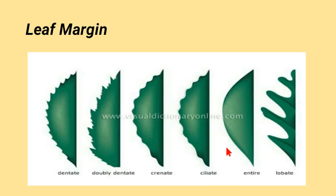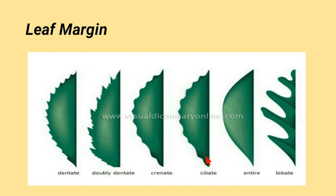On the basis of leaf margins, leaves are classified as dentate, doubly dentate, crenate, ciliate — having small hair-like structures on the margin — entire, where the margin is smooth with no crenation or dentation, and lobate, where the margin has many lobes.